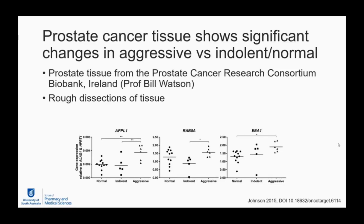Since microarray cohorts can be variable, it was important to measure these markers by QPCR. We obtained fresh-frozen samples from the PCRC Biobank in Dublin, Ireland. They were carefully cut, H&E stained, and studied by expert pathologist John O'Leary at Trinity College, with the approximate location of cancer tissue noted before rough dissection and RNA extraction. Despite the rough dissection, the changes in gene expression of APPL1, RAB5, and EEA1 were large enough to overcome dilution of cancer cells with normal cells.